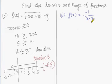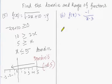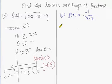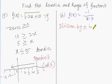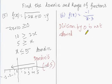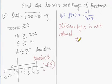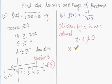If you have a variable in the denominator, the function should not be divided by 0 — division by 0 is not allowed. That is the rule. So if you look at the denominator, it should not be equal to 0. Therefore x minus 3 should not be equal to 0, which means x should not be equal to 3.